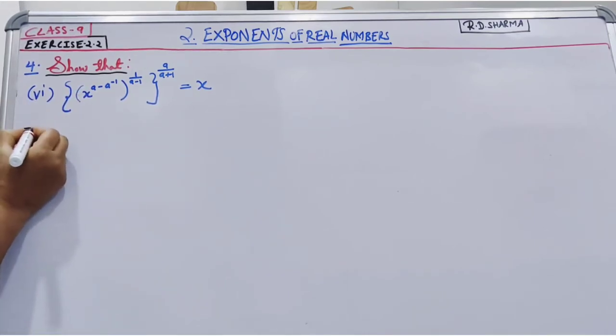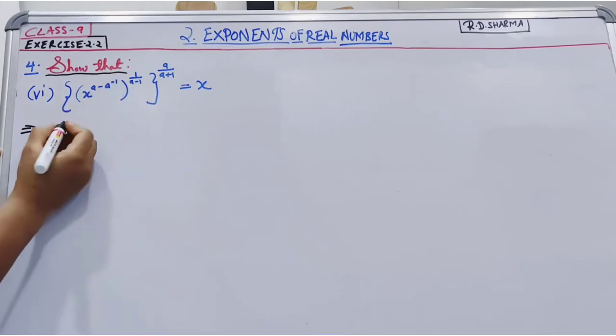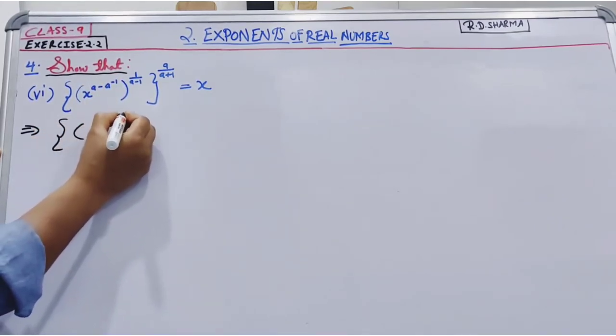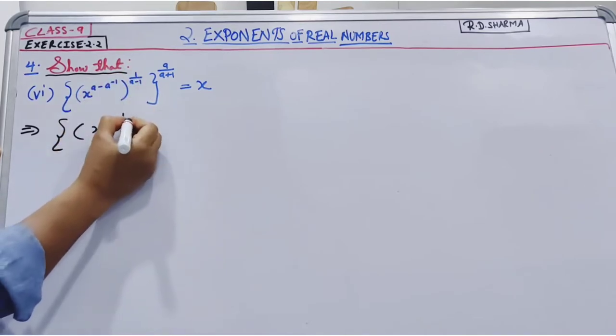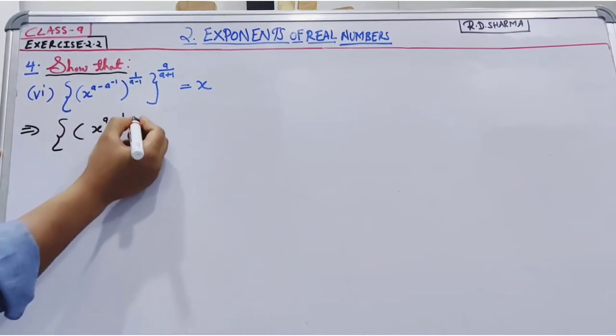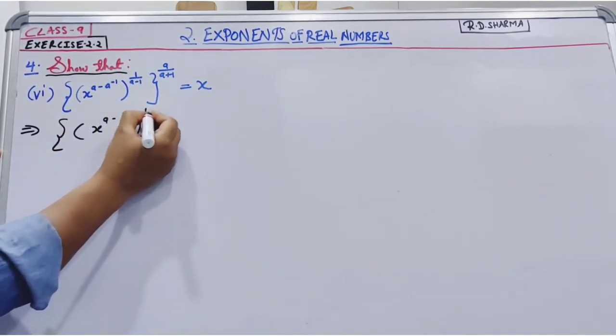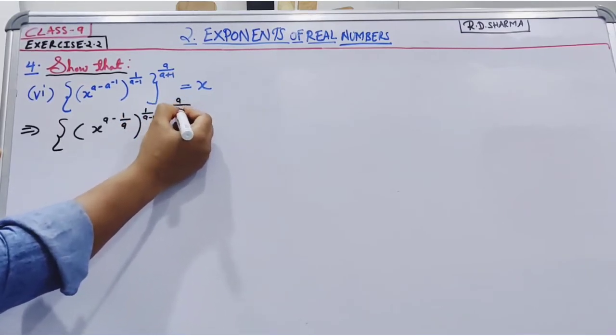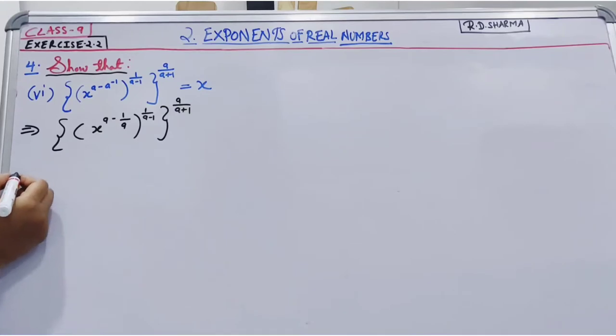This is a minus a to the power minus 1. So we can write this like a minus a ki power minus 1, so we can write this like 1 by a to the power 1 by a minus 1, and to the power a divide by a plus 1.